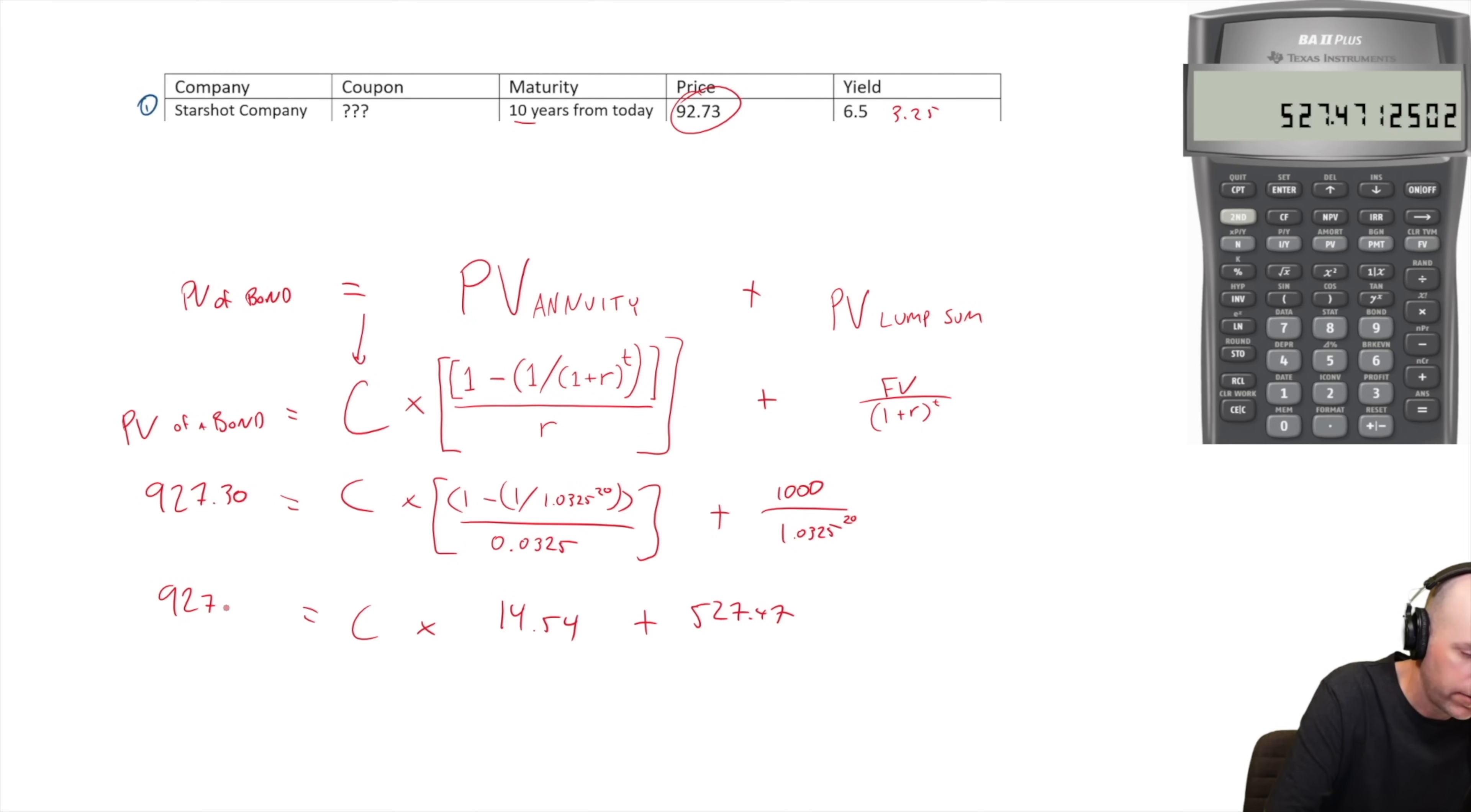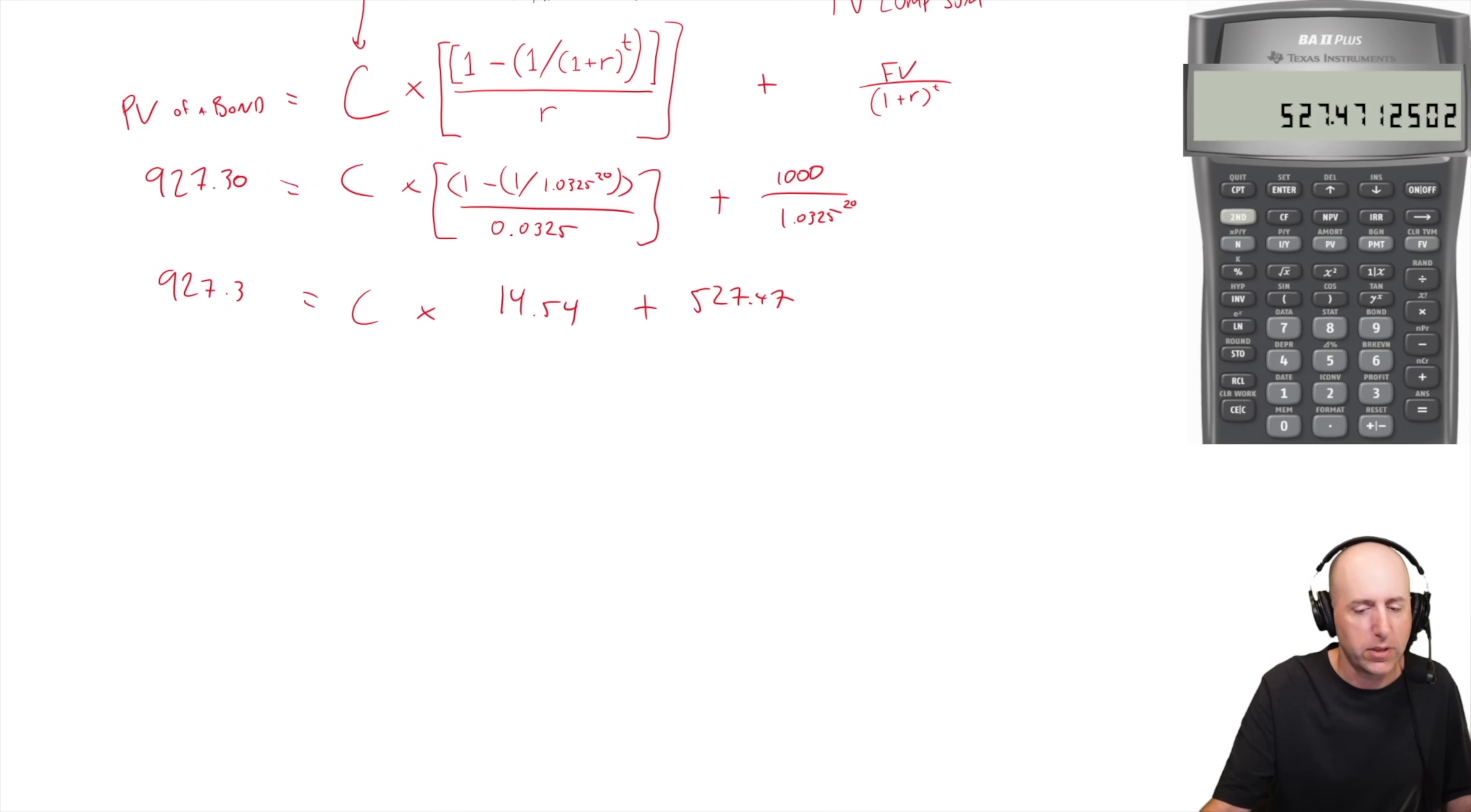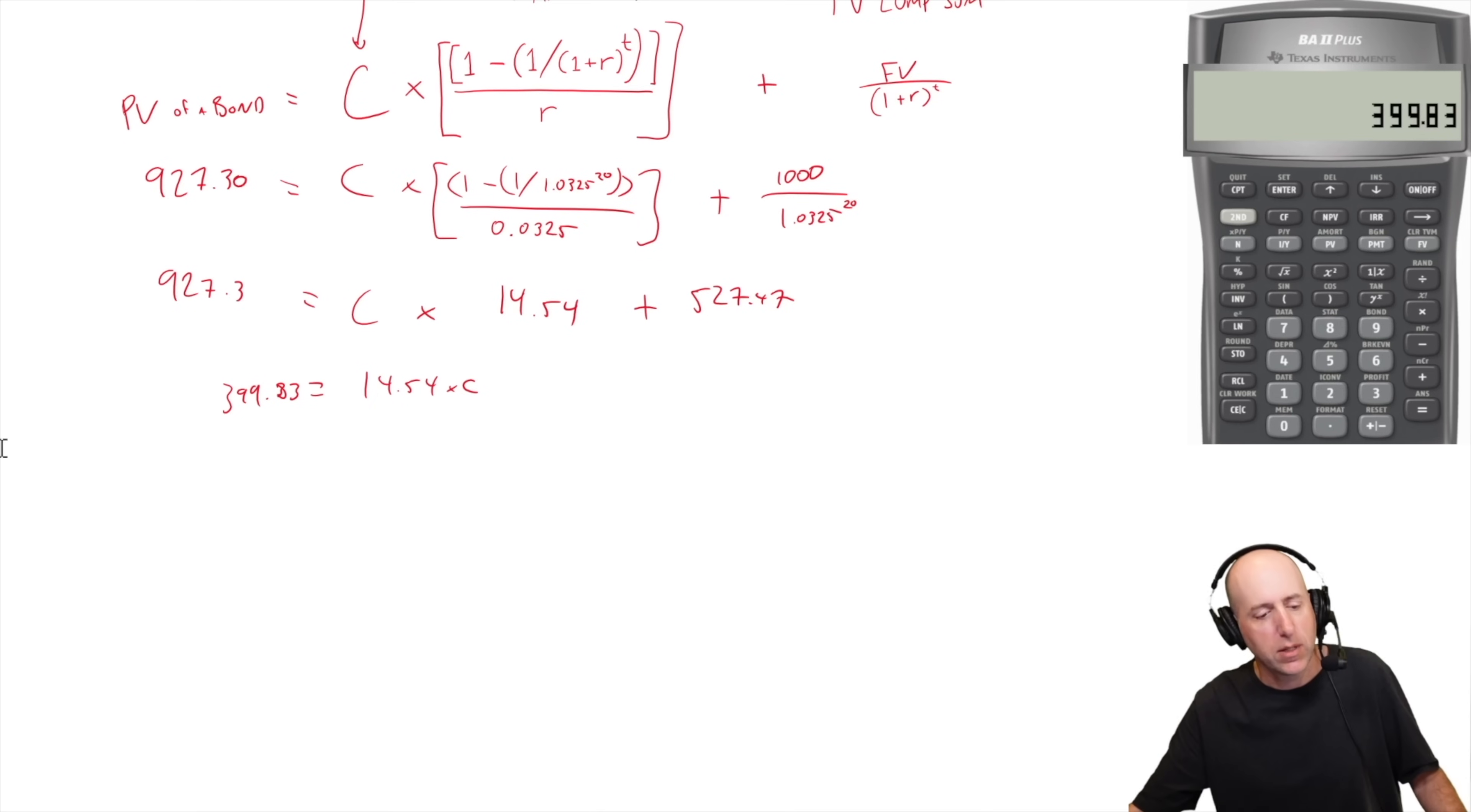One over that times $1000 equals $527.47, equals $927.30. So $927.30 equals C times 14.54. We'll subtract $527.47 from $927.30. $927.30 minus $527.47, I get $399.83.